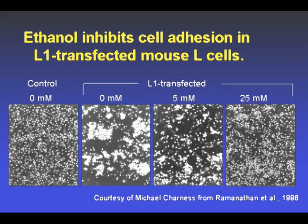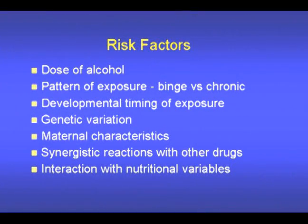This increase in cell adhesion is inhibited by ethanol in a dose-dependent manner. Ethanol seems to alter cell responses to molecules that regulate neuronal proliferation, migration, and differentiation. FAS is only the tip of the iceberg in terms of outcomes. In fact, only a minority — which is 10-40% — of the children of chronic alcoholic women are diagnosed with FAS.